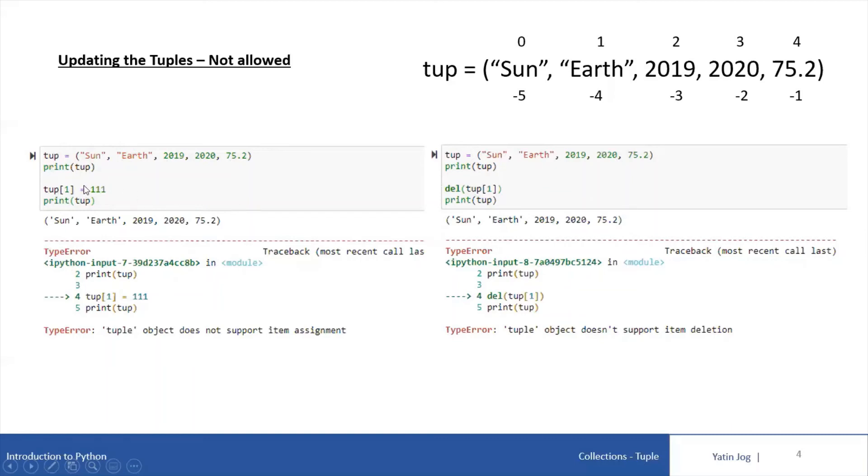Now, just like we want to modify, I am also trying to delete a tuple element using del. So, I am again defining the same tuple with 5 elements and if I try to use del which I can use with lists to specifically delete a list element, if I say del tuple of 1, that means I want to delete this first element.